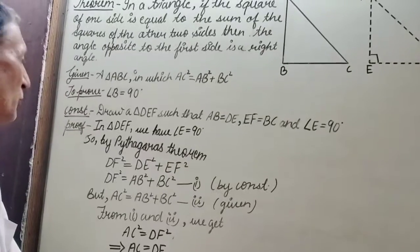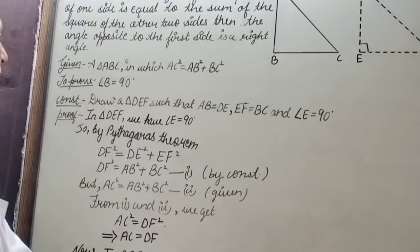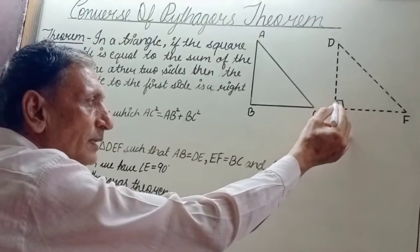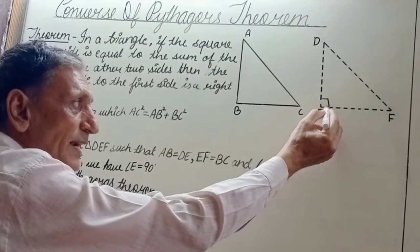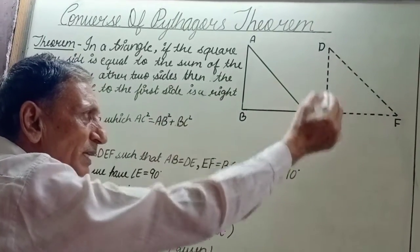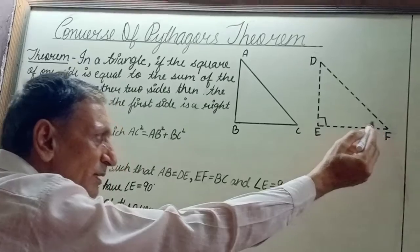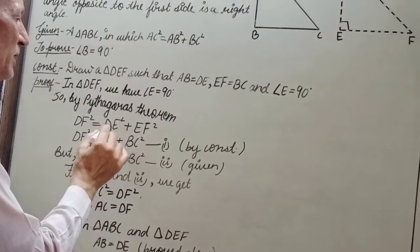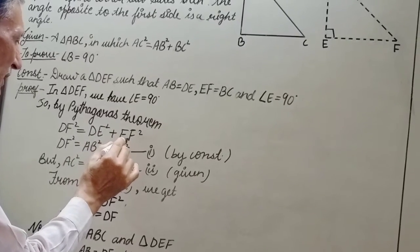So, in triangle DEF, angle E is a right angle. Therefore, DF² = DE² + EF² by Pythagoras theorem. DF² = DE² + EF².